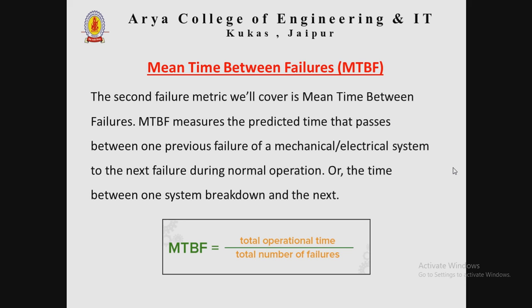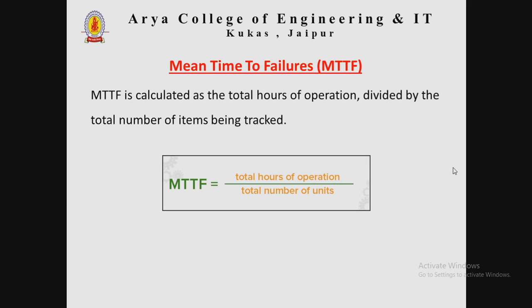The second metric is Mean Time Between Failures (MTBF), which measures the predicted time that passes between one previous failure of a mechanical or electrical system to the next failure during normal operations — or the time between one system breakdown and the next. Mathematically, MTBF is equal to total operation time divided by total number of failures.